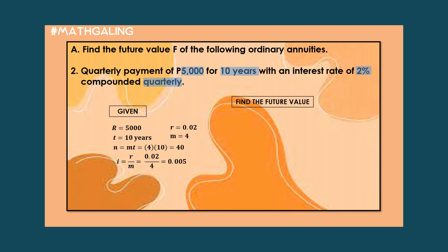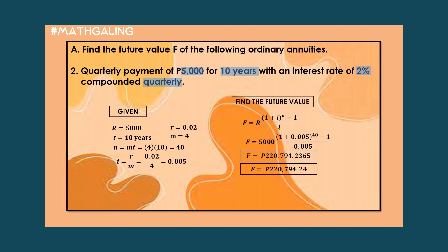Now let's find the future value. Using the future value equation and substituting our given, F is equal to 5,000 times (1 plus 0.005) raised to the power of 40, minus 1, over 0.005. Using the calculator, the answer is 220,794.2365 pesos, which rounds up to 220,794.24 pesos.